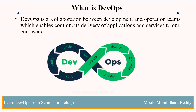A developer writes the code and tests it locally. Everything seems fine on their end. But the operation team tries to deploy the application on the server, and they say 'this application is not working, you have issues in the code.' The developers say 'no, we tested everything, everything is fine.' This creates a gap. DevOps helps us reduce that gap and identify the automation tools needed.